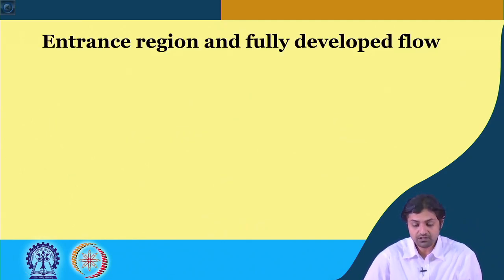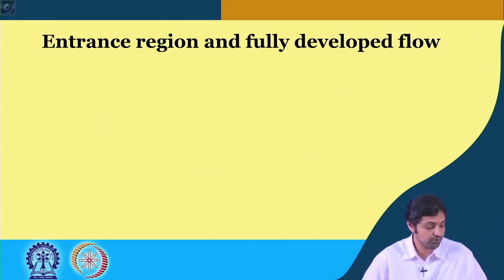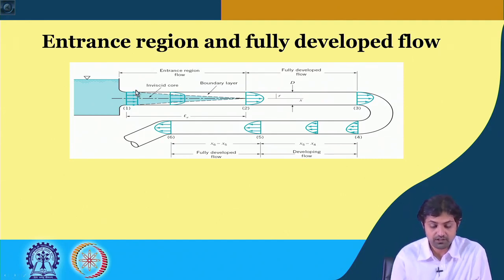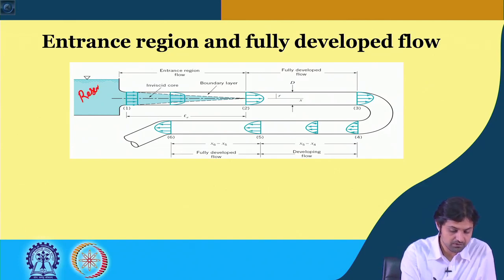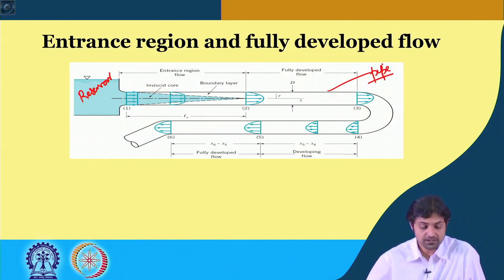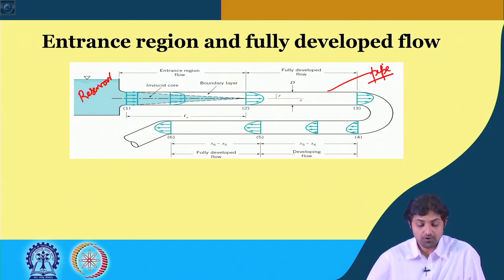Now we should talk about the entrance region and fully developed flow in pipe flow. There is a pipe coming out from a reservoir. As soon as water comes out from the reservoir into the pipe, the water will take some time to become fully developed. This region of length l_e is called the entrance region.